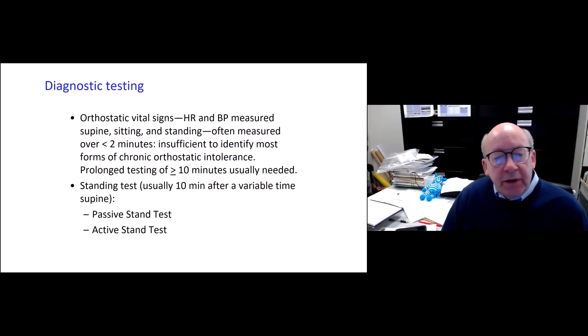So to diagnose orthostatic intolerance, many people will check what are called orthostatic vital signs, where you measure the heart rate and blood pressure supine, seated and standing. Most often in medical clinics, this is measured over less than two minutes. And that's really insufficient to identify most forms of chronic orthostatic intolerance. Prolonged testing of at least 10 minutes is usually needed. And one of the forms of prolonged testing is a standing test. And that's usually just 10 minutes after some period of time supine. There are two forms of this. One is the passive standing test where the patient is leaning back against the wall with their back against the wall and their feet sort of six to eight inches away. The other is an active standing test where the person is standing unsupported in the exam room.